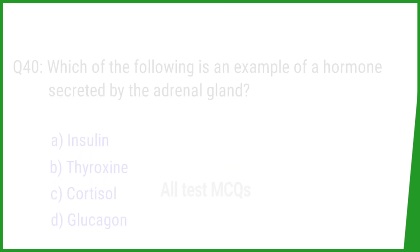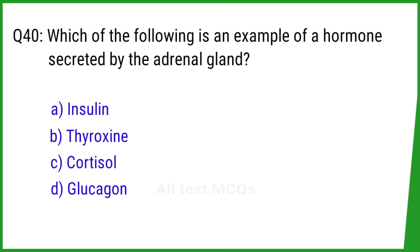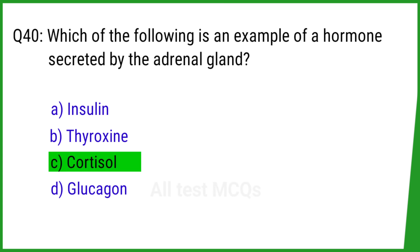Question number 40. Which of the following is an example of a hormone secreted by the adrenal gland? The right answer is option C: Cortisol.